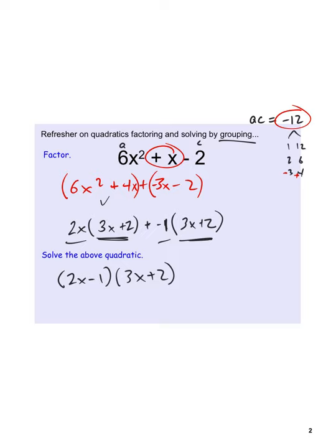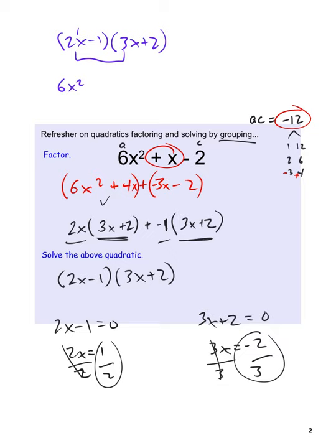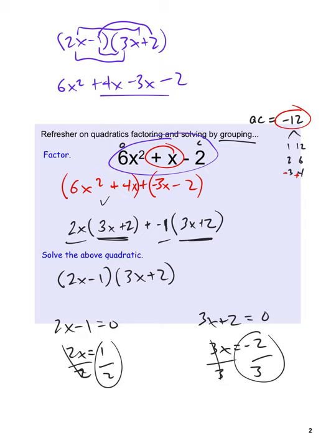To solve, we set each factor equal to 0. So 2x minus 1 equals 0 gives x equals 1/2, and 3x plus 2 equals 0 gives x equals negative 2/3. We can verify by FOILing — first, outside, inside, last — giving us plus 4x minus 3x in the middle and 6x squared minus 2 at the end, which equals the original polynomial.